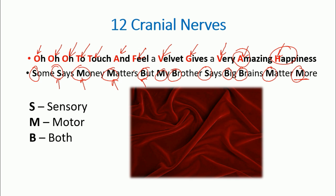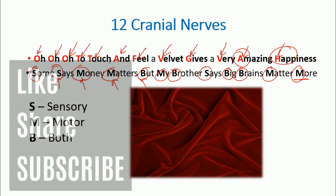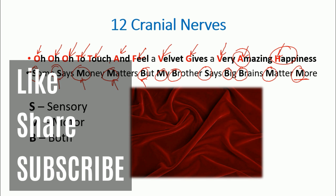For simplicity, write both sentences side by side: 'Oh oh oh to touch and feel a velvet gives a very amazing happiness' and 'Some says money matters but my brother says big brains matter more.' If you know these two sentences, you can easily remember all 12 cranial nerves and their types. Please hit the like button, share this video, and subscribe for more videos. Thank you!